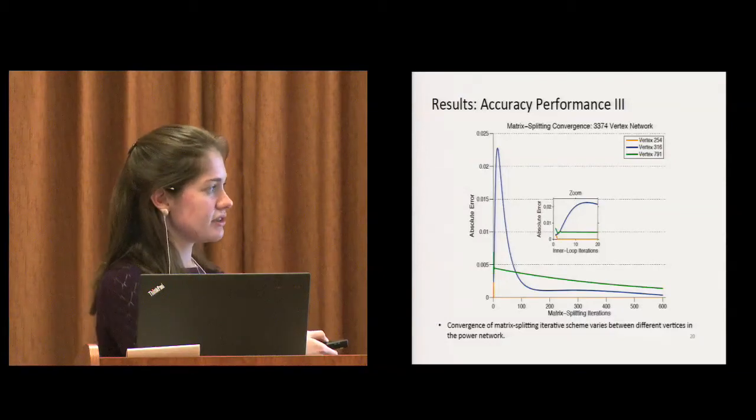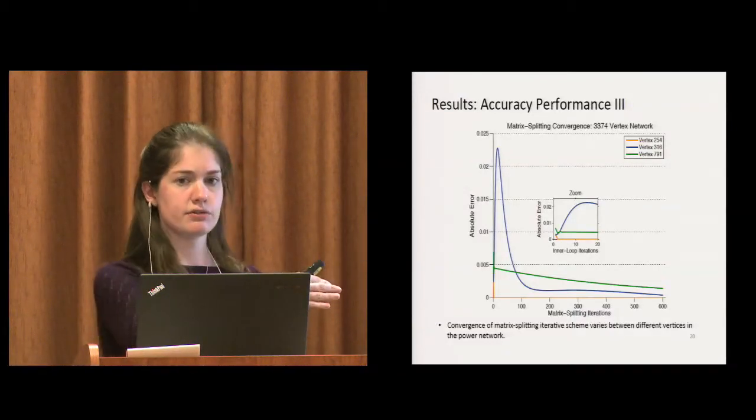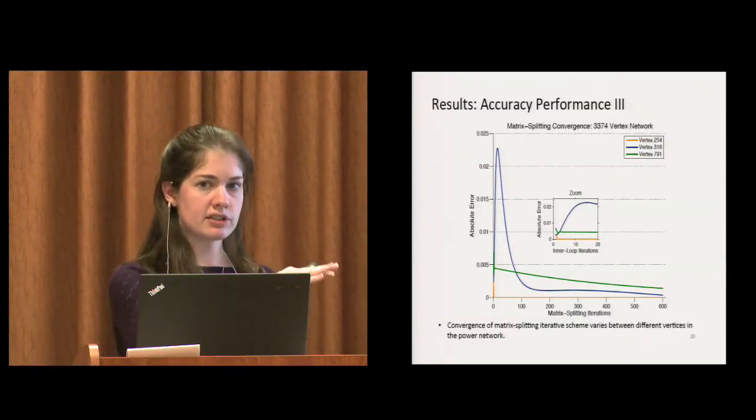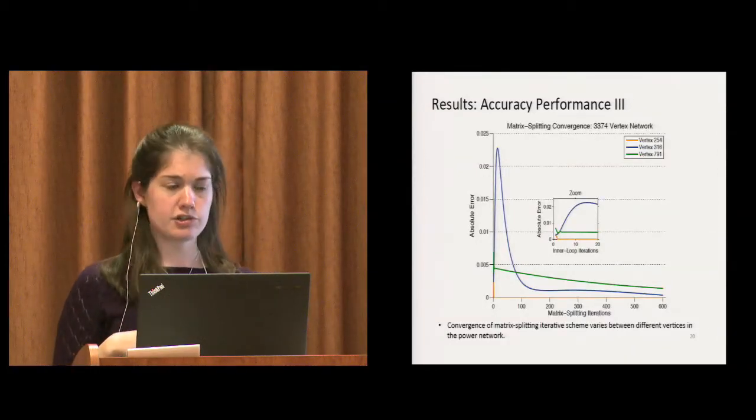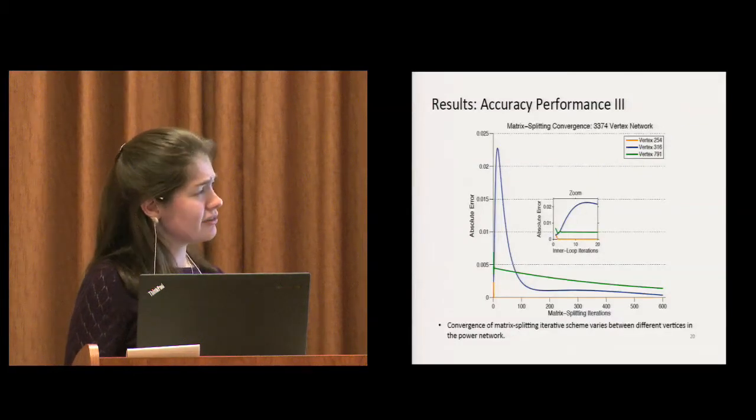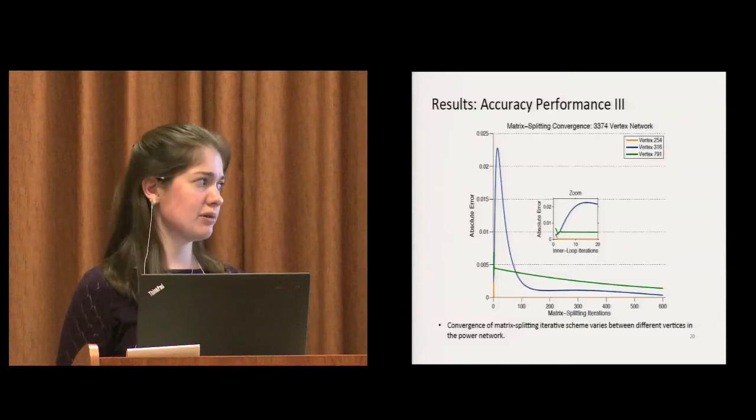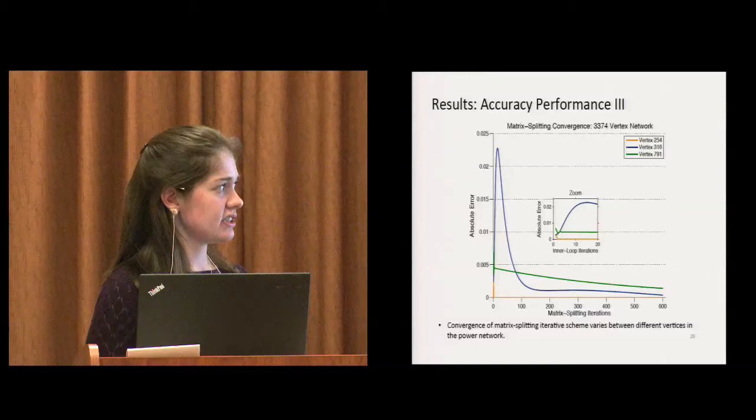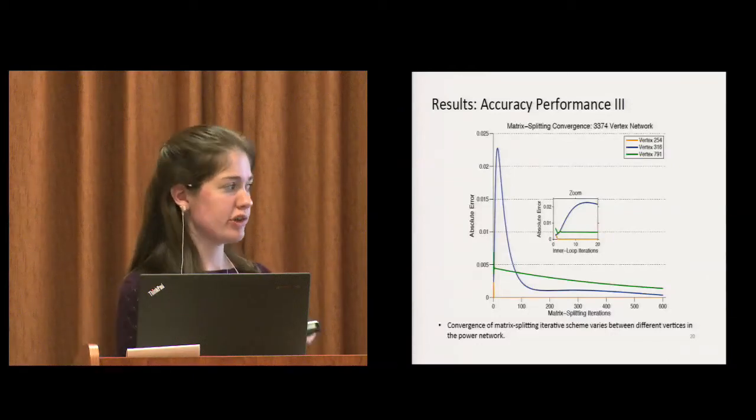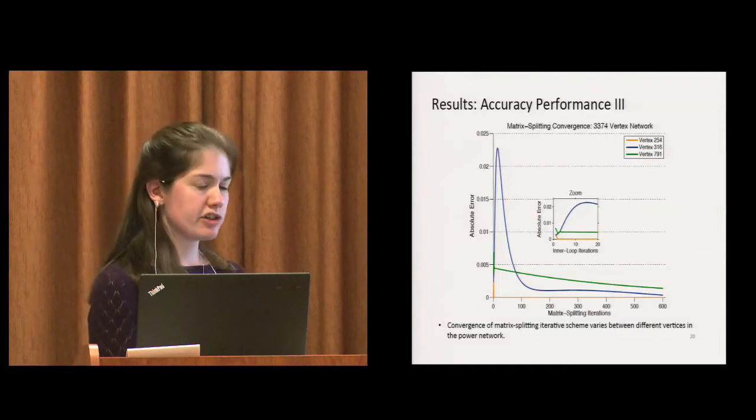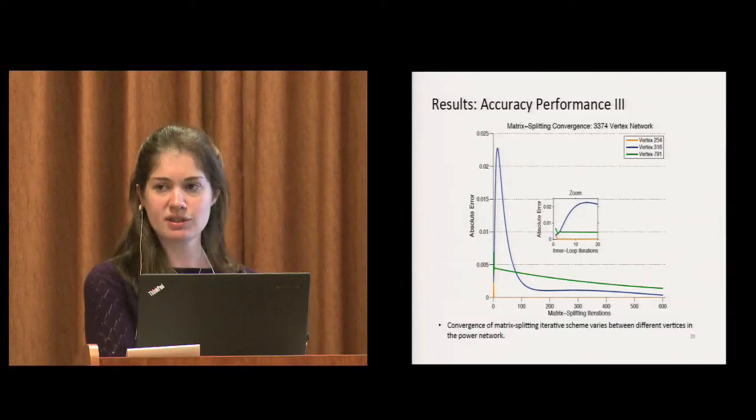Lastly, I thought it was interesting to see if, again focusing on this 3,000 vertex network, if there's any variation amongst the different vertices in terms of their convergence. We do see that for, say, node or vertex 254 in orange, it's converging very quickly. But vertex, for instance, 791 in green is taking a lot more iterations. So there is variation. I'm curious if we can take advantage of that to speed this up.